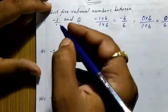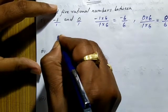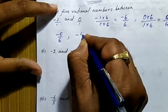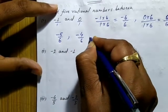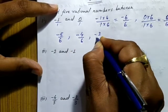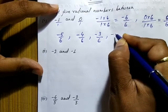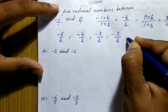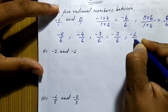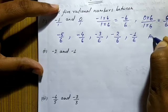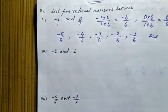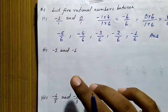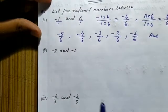So we have to find five rational numbers between minus six upon six and zero upon six. The first one is minus five upon six, second is minus four upon six, third is minus three upon six, fourth is minus two upon six, and fifth is minus one upon six. This is the answer. You can also write this in standard form or simplest form.